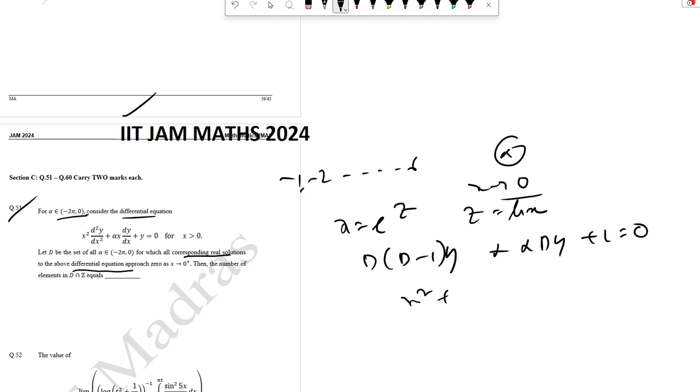So this becomes m square, giving us m square plus alpha minus 1 times m plus 1 equal to 0. The value of m will be minus b plus minus root over b square minus 4ac by 2a. So we'll do this case-wise.